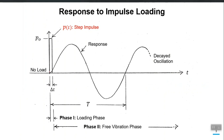This is a step impulse — the red line is actually representing a loading called step impulse, which means it is zero, then it increased from zero to some value p-naught and stayed there for a very short interval of time delta-t, and then after that time it again becomes zero and stays zero. In order to categorize that loading as an impulse, delta-t should be very small — far less than the actual time period T of the system.